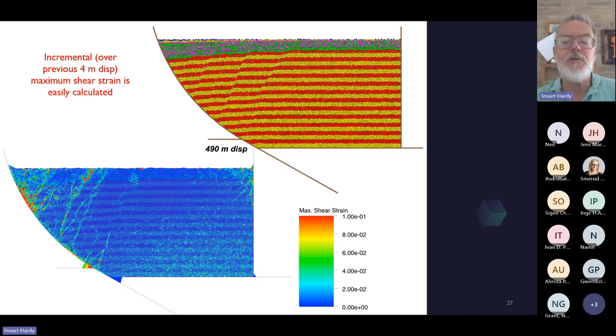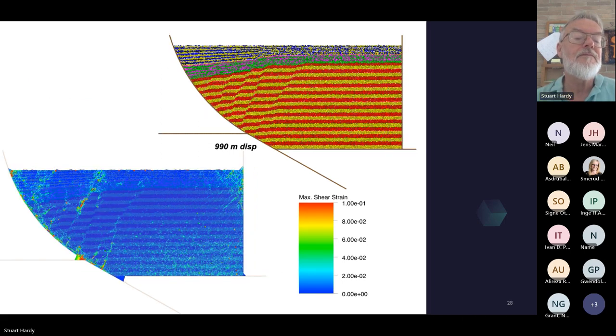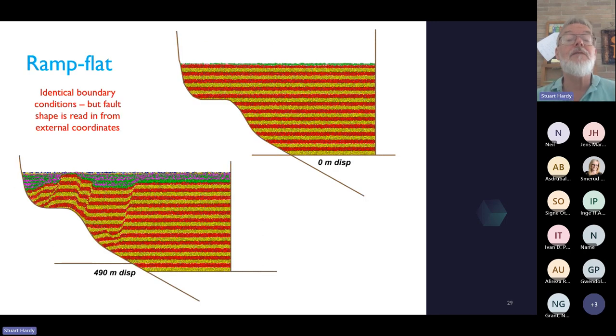We can look at the incremental maximum shear strain in this instance over the previous four meters of displacement. So this is like 1% of the total displacement at this stage. Here is the actual geometric model. And here is the maximum shear strain going from 0.1 to 0. As you can see, the majority of the model is unstrained, undeformed. But we can see deformation, obviously, along the mylar sheet, but also very clearly within the growth strata here and here. And faults that are being rotated. And this is at 900 meters, nearly 1,000. Again, faulting appears to be going up into the cover. But actually, when you look at it here, there is really rather a lot of deformation in this zone in here. It's not immediately apparent. And obviously, deformation along and adjacent to the fault plane.